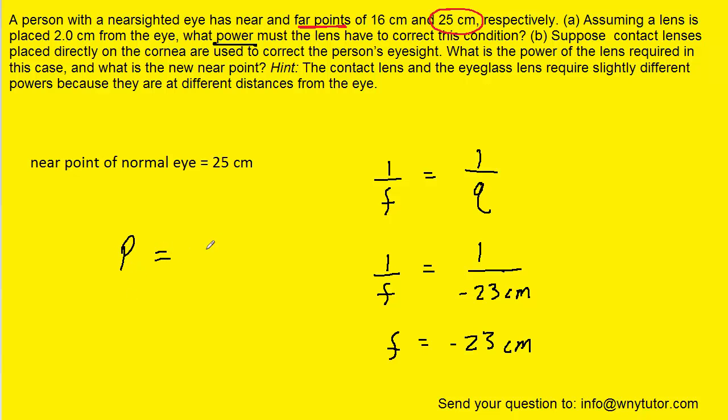Next, we just want to find the power. Power is equal to 1 divided by the focal length. We go right back to placing the negative 23 underneath a 1. But to calculate power, we have to change our focal length into meters. We would have negative 0.23 meters. When we type this into our calculator, we get approximately negative 4.3, and the unit for power will be diopters. This is finally the correct answer to part A of the question.